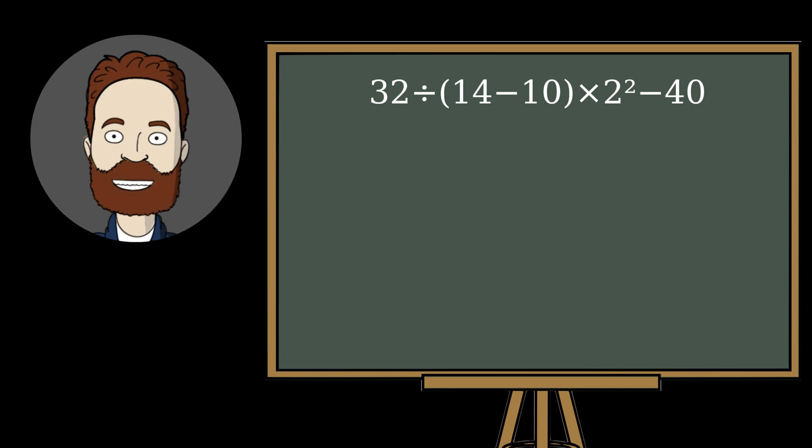Many people solve it like this. First, they calculate what's in the parentheses, that's 4. Then they raise to a power, 2 squared is 4. Next, they multiply these results, that's 16. So now they have this.